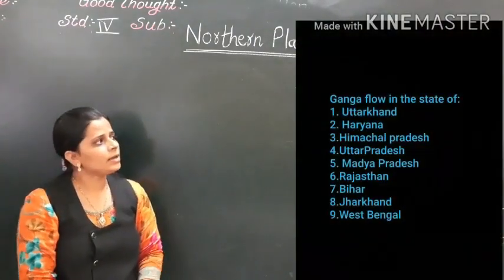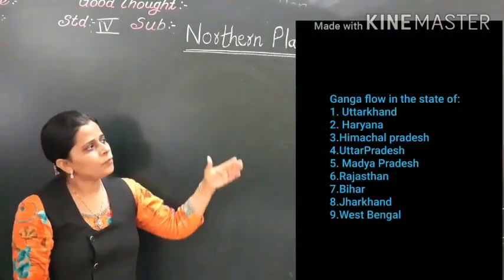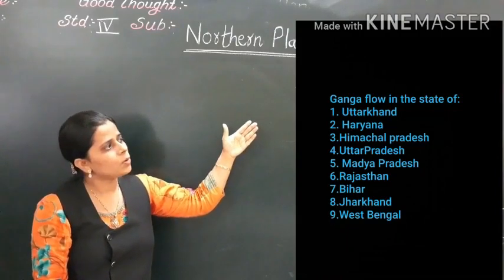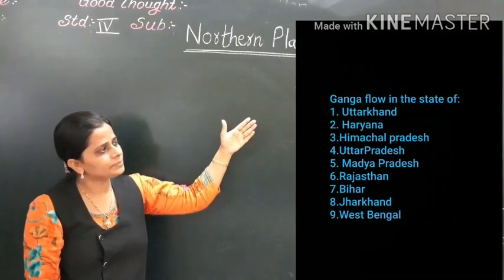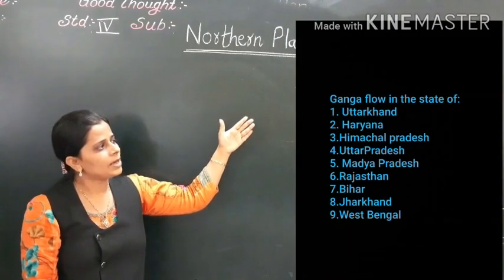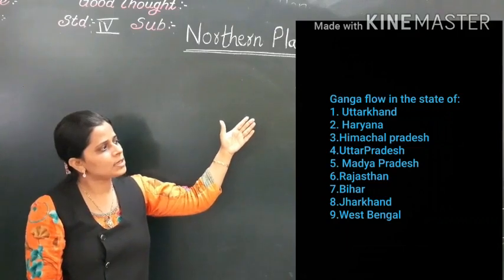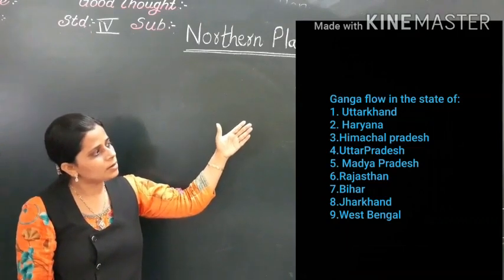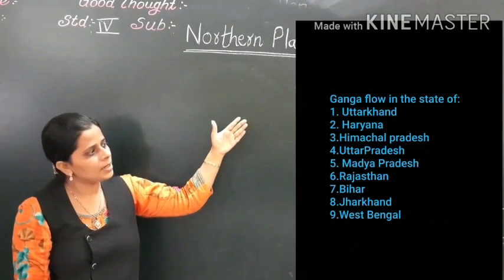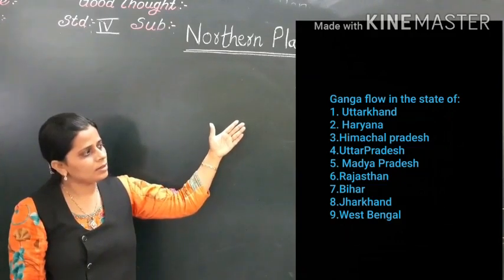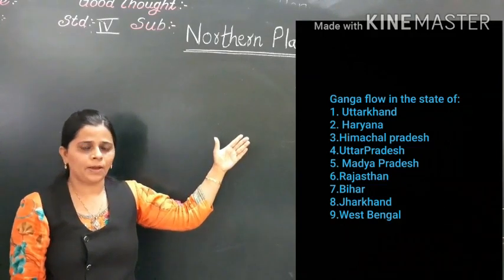The river Ganga flows through the states of Uttarakhand, Haryana, Himachal Pradesh, Uttar Pradesh, Madhya Pradesh, Rajasthan, Bihar, Jharkhand, and West Bengal.